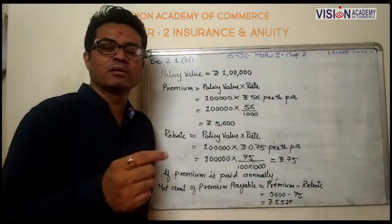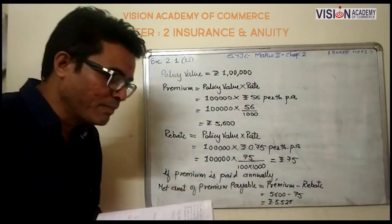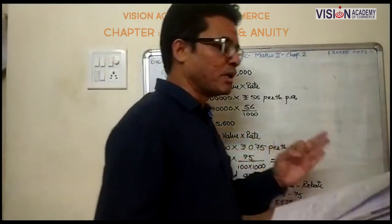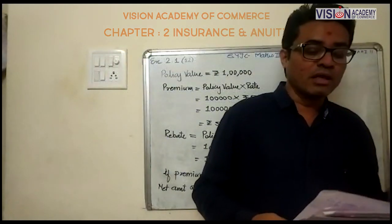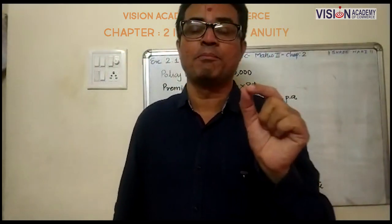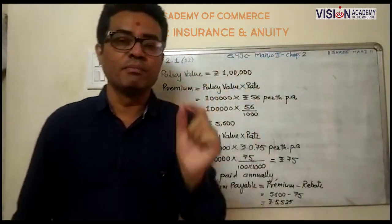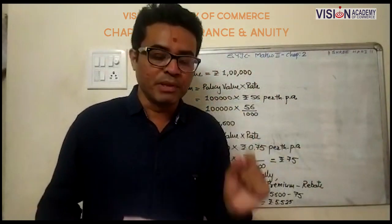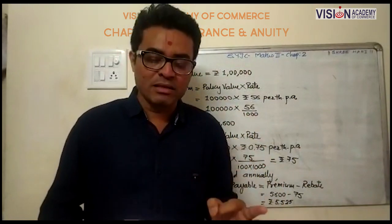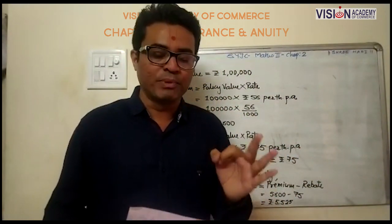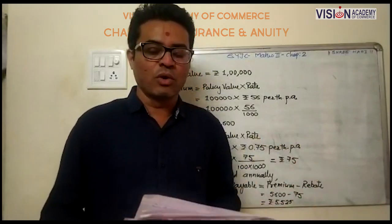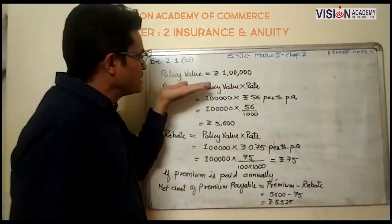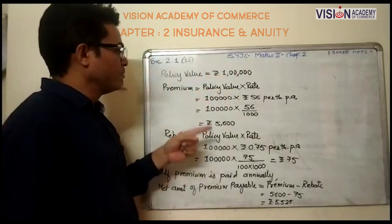Now question number 12: The rate of premium on a policy of rupees 1 lakh is rupees 56 per thousand. A rebate — which is a type of discount — of rupees 0.75 per thousand is permitted if the premium is paid annually. Find the net amount of premium payable if the policyholder pays the premium annually.